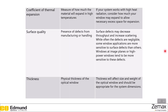Surface quality refers to the presence of any defects from manufacturing or handling. Some systems are more sensitive to surface quality than others, because surface defects can decrease throughput and increase scattering. While defects are often negligible, some window applications are more sensitive to these than others. Finally, the most straightforward consideration is the thickness of the window, which — like density — will affect the size and weight of the optical system and should be appropriate for the system's dimensions.